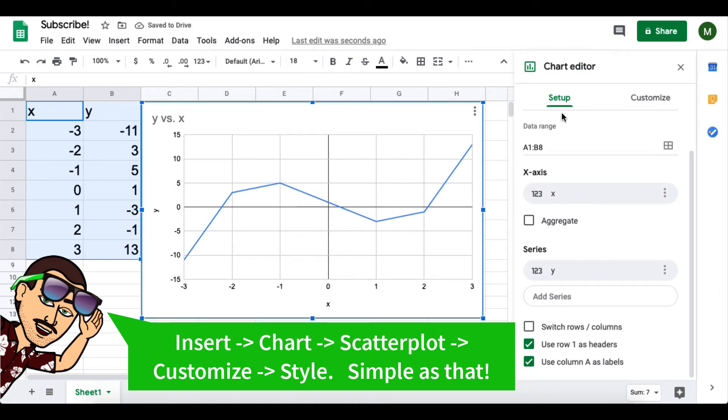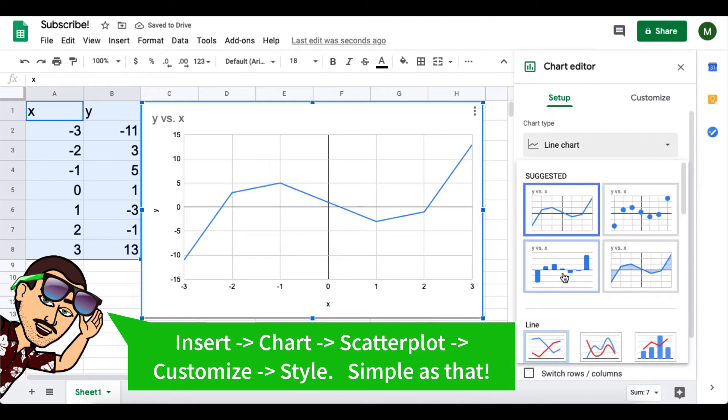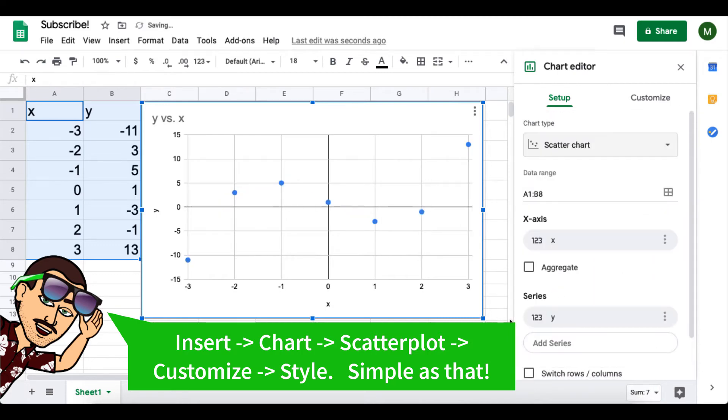We want a scatter plot. So we scroll up and go to chart type scatter plot. And now we look at our data.